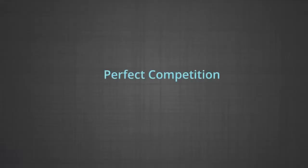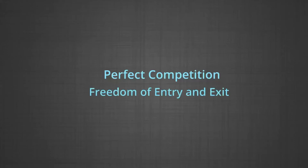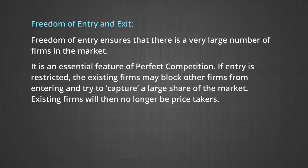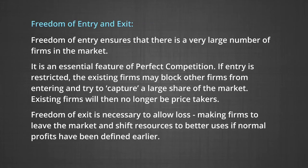Number three: freedom of entry and exit from the market. This means that any firm can enter or leave the industry at any time. Freedom of entry ensures that there is a very large number of firms in the market, which is an essential feature of perfect competition. If entry is restricted, the existing firms may block others from entering and try to capture a large share of the market — existing firms will then no longer be price takers. Freedom of exit is necessary to allow loss-making firms to leave the market and shift resources to better uses.